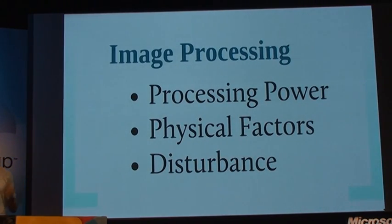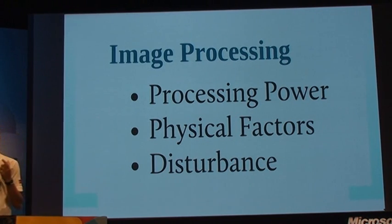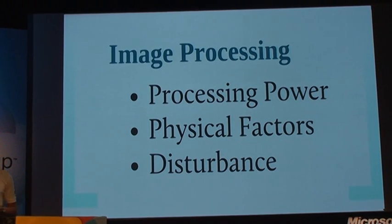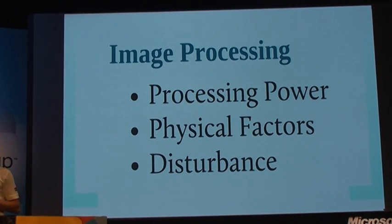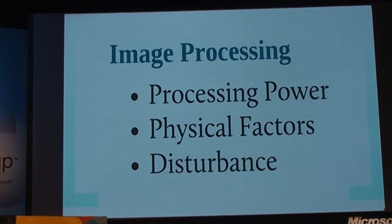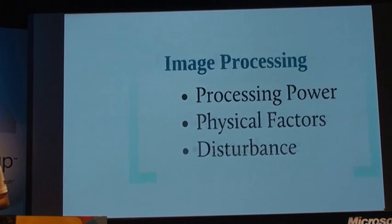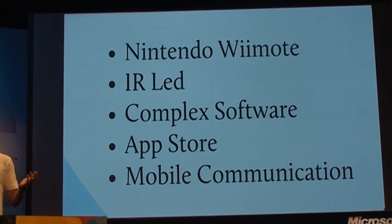We tried image processing at the beginning, but it was consuming on the PC — you start getting lags and it wasn't user-friendly. Physical factors were also a problem: light changes, someone passing by, someone turning the light off. We've seen solutions where you blink to click, but if someone else is watching the screen, they blink and they're clicking too. There's a lot of physical disturbance that would make the camera go unreliable.